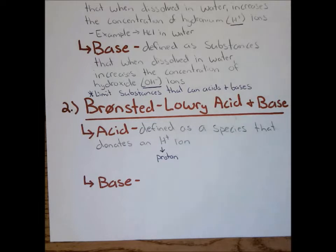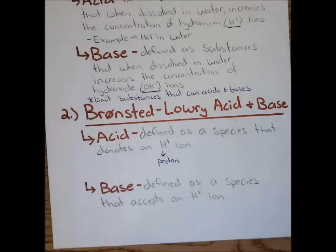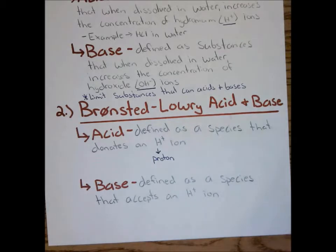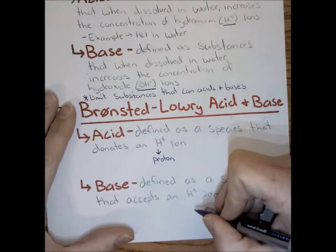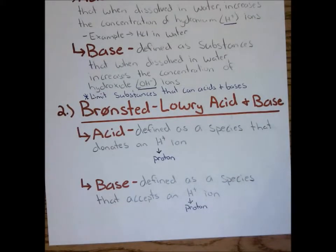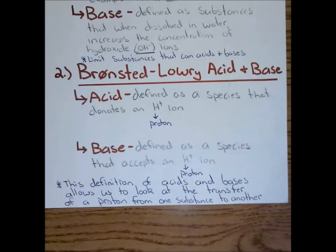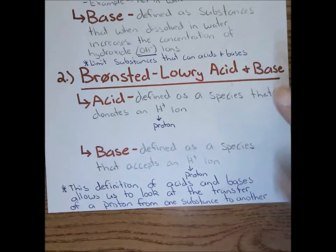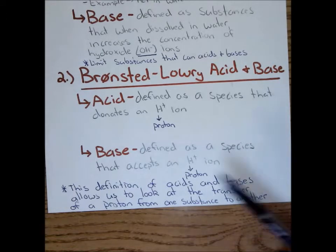A Bronsted-Lowry base is defined as a species that accepts an H+, or proton. The big takeaway with a Bronsted-Lowry acid or base is that we can now define an acid or base on the basis of a transfer of a proton. This allows us to look at the transfer of a proton from one substance to another, greatly expanding what we can call an acid or base.